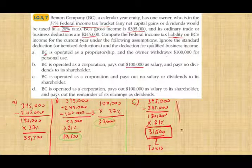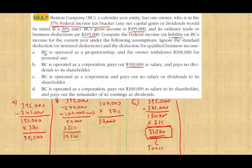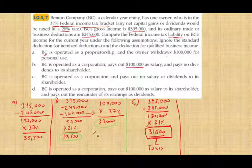We'll see later, when we work with capital accumulation tax, that sometimes you cannot avoid paying out the dividend. But for now, scenario C represents the least amount of taxes paid.